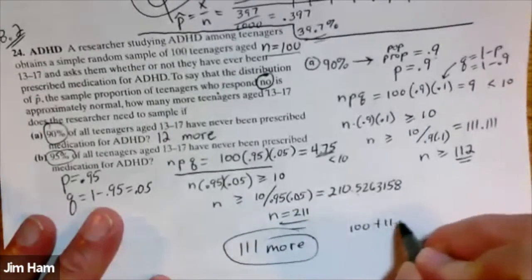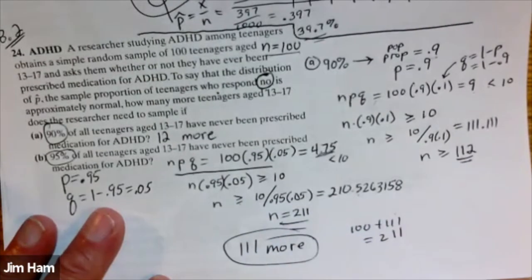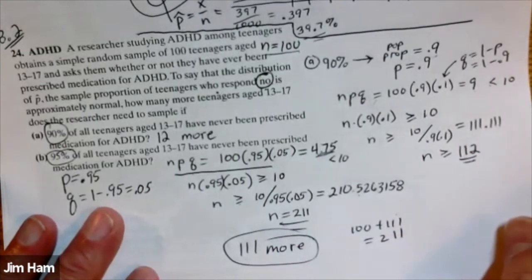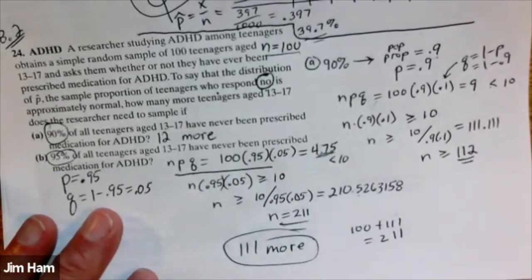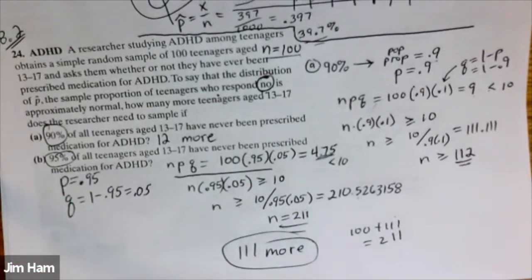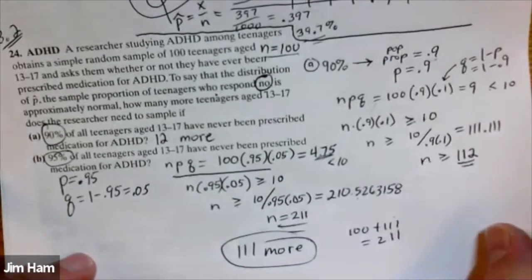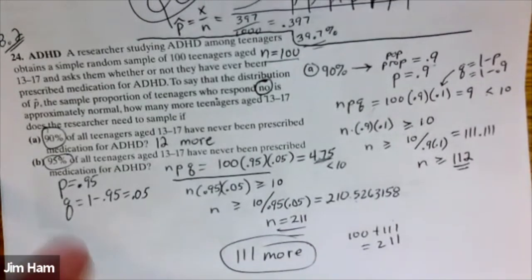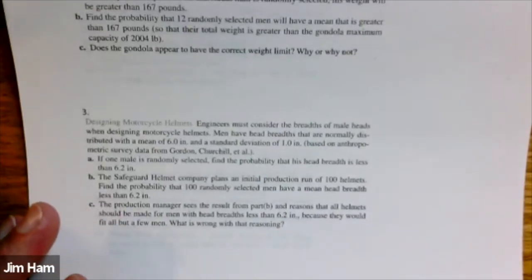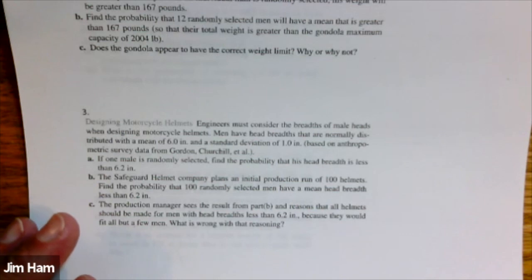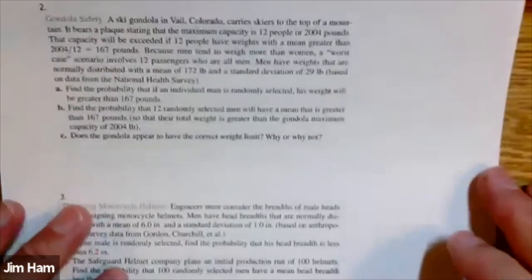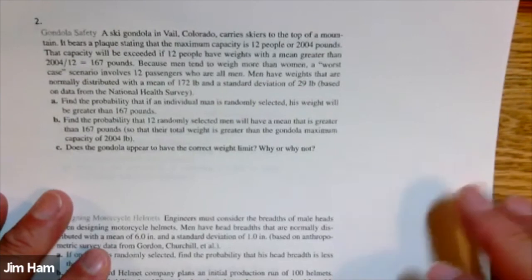Sometimes the sample size is just too small, and if it's too small we can't use our procedures. If it's not a normal sampling distribution in section 8.2, then you can use the binomial distribution. Now I want to do one problem from section 8.1 on the sampling distribution for the sample mean, and one from section 8.2 on the sampling distribution for p-hat. The first one is the gondola problem.